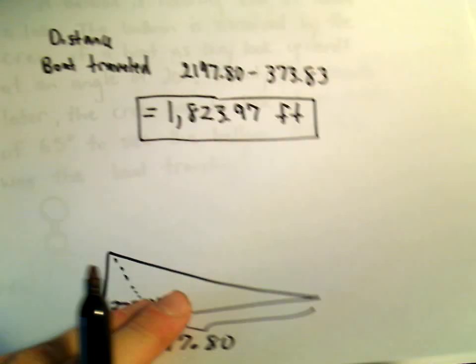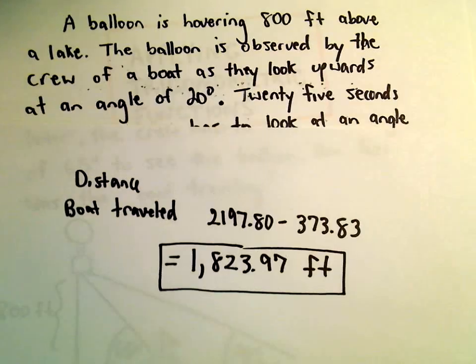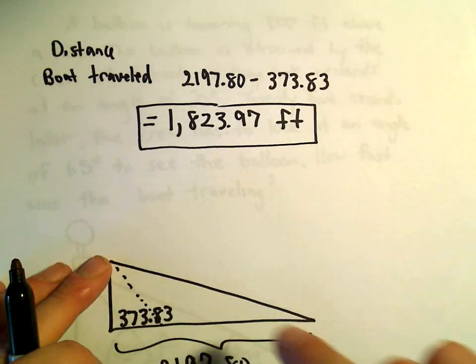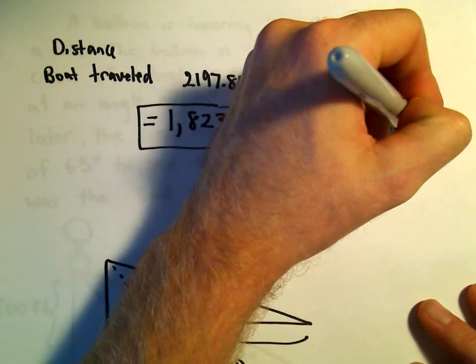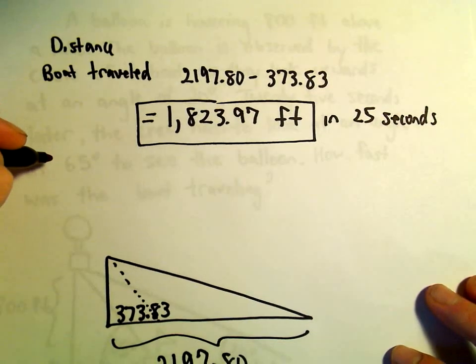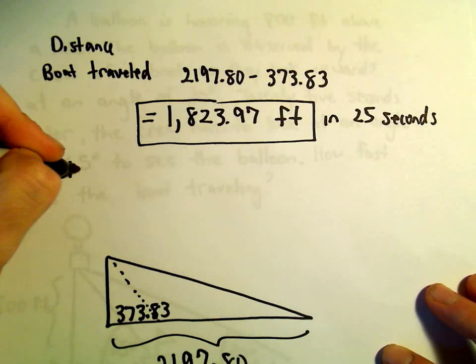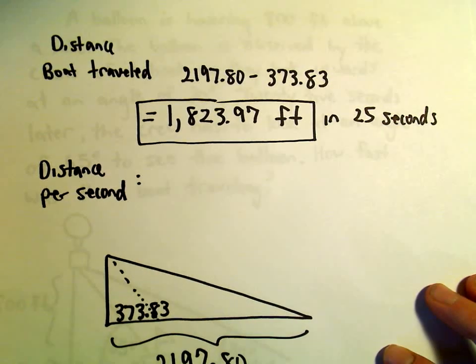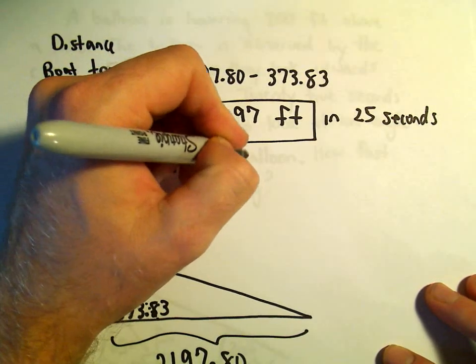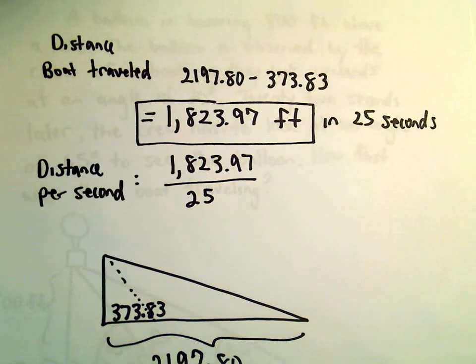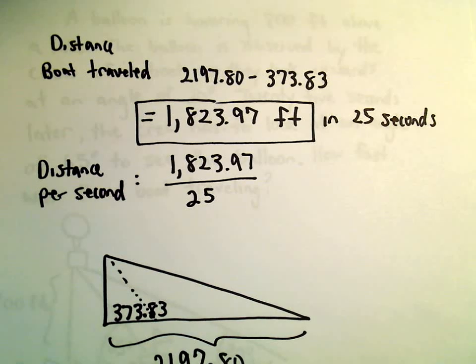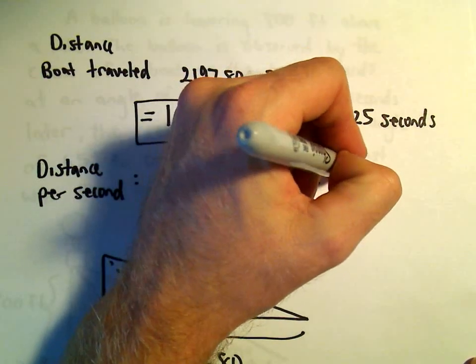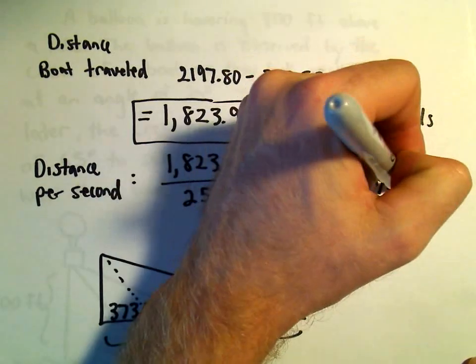Now we're going to use the time that was involved. The boat did this in 25 seconds, so this was the distance traveled in 25 seconds. That means to figure out the distance traveled per second, we would just take this value and simply divide that by 25. When I divide that by 25, I'm getting this to equal 72.96 feet per second.